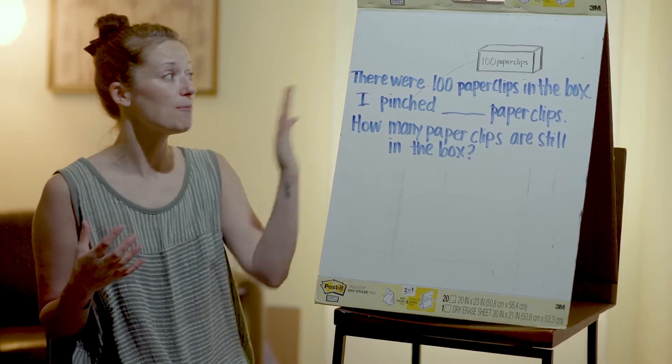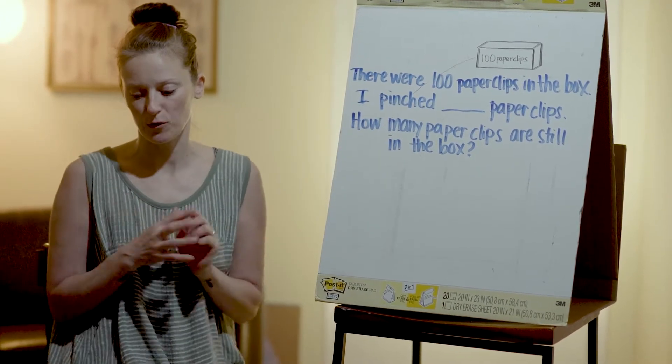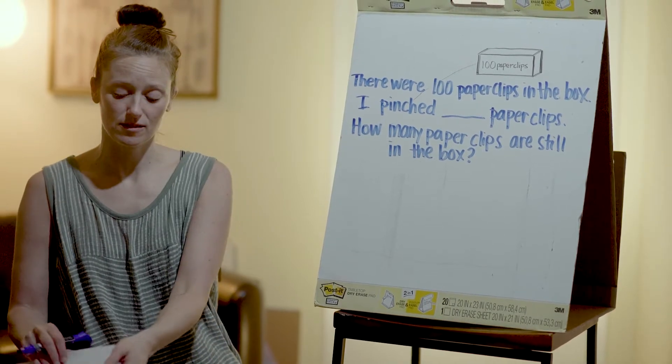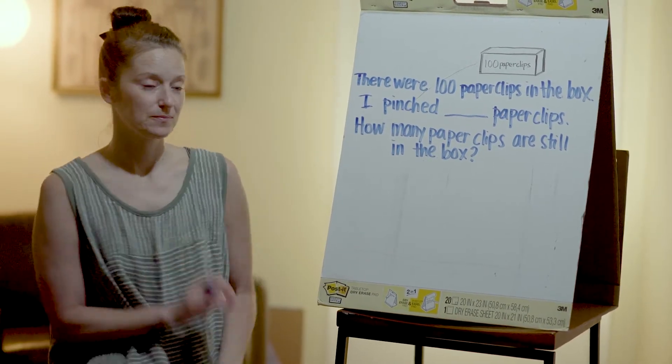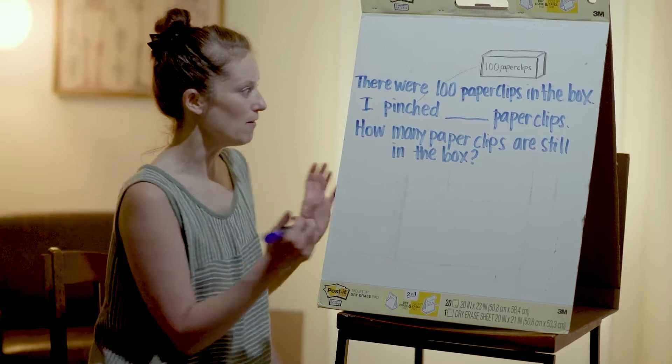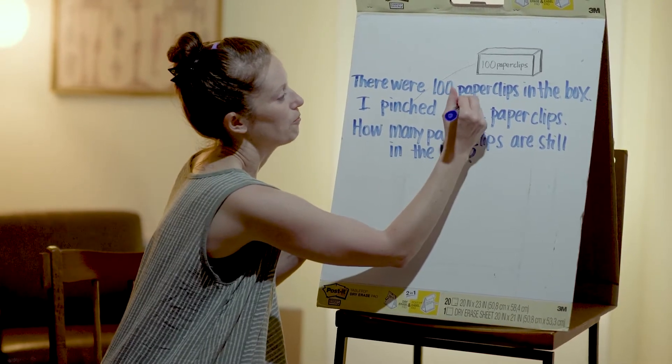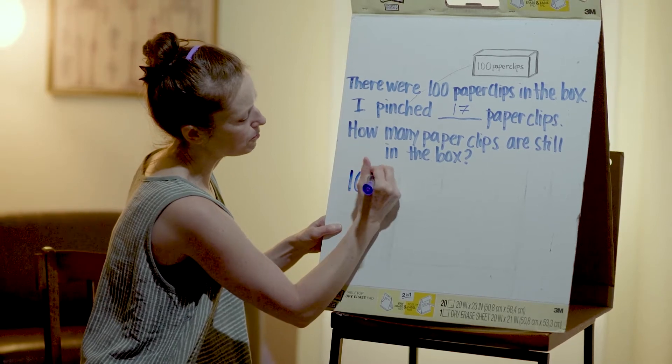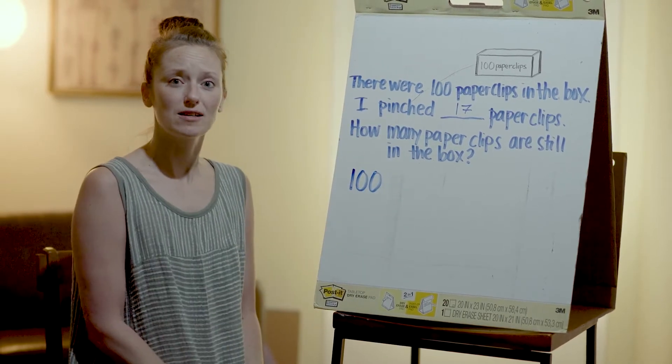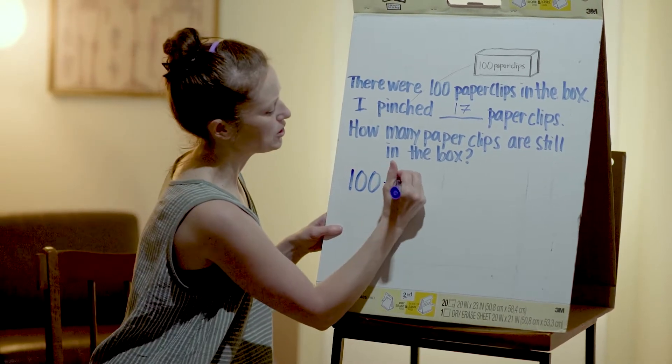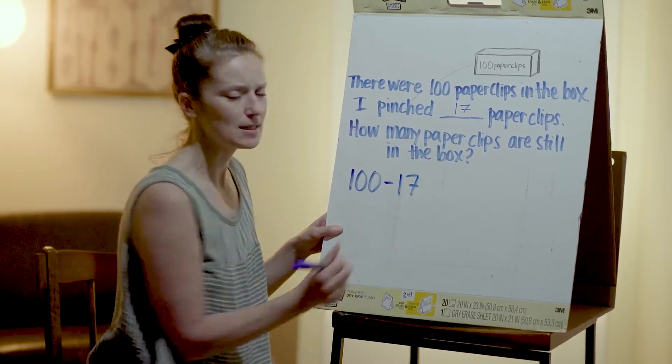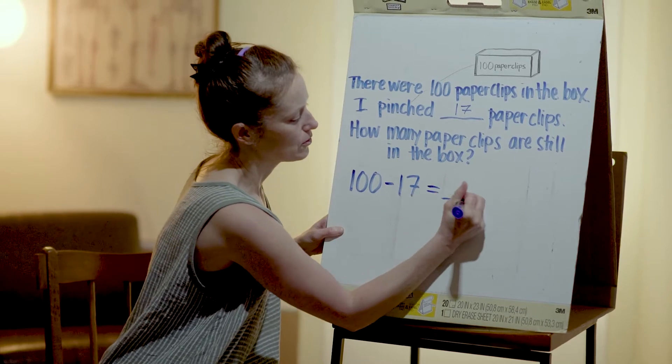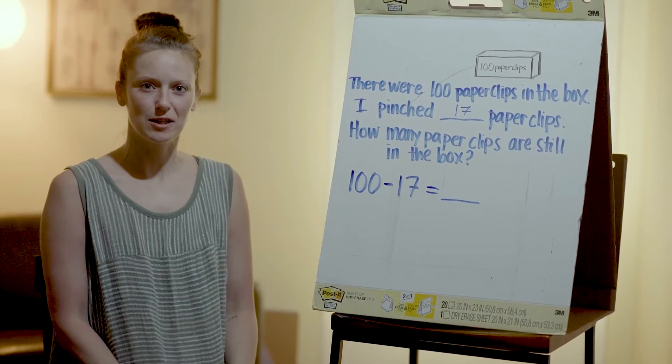So what are we trying to figure out here? That's right, we're trying to figure out how many are left in the box after we pinched some. So what equation could we write in order to show this? Well, so I pinched out 17. So the equation we could write: 100 paper clips in all in the box, and then we pinched out 17. So we took 17 away or subtracted 17.